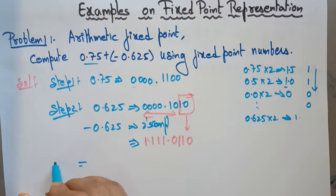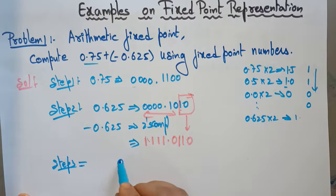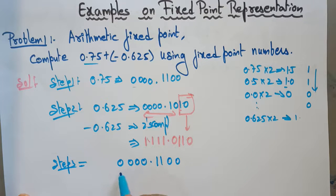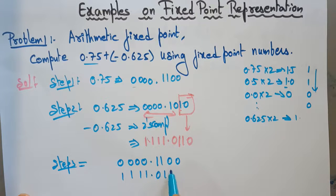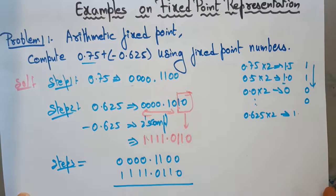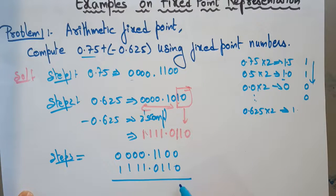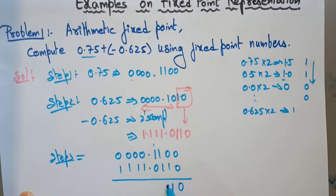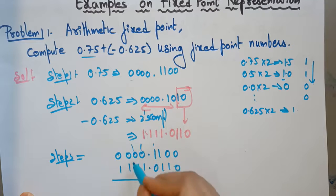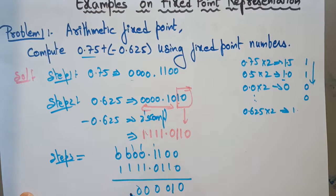Now in step 3, simply add both numbers. 0.75 is 0000.1100 and minus 0.625 is 1111.0110. Adding them: 0+0=0, 0+1=1, 1+1=0 carry 1, and so on through each bit position. Any carry out at the end is discarded. This gives the final result after the addition.